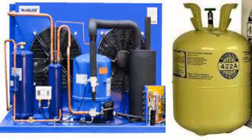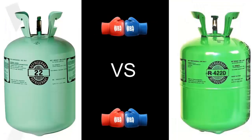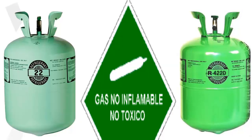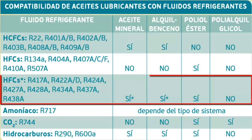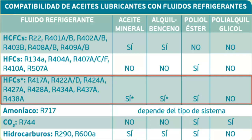Both R22 and gases in the R422 family are non-flammable and non-toxic, classified as A1 in terms of safety, and belong to group L1. These refrigerants are compatible with a variety of lubricants, including mineral oil (MO), alkylbenzene oil (AB), and polyolester oil (POE).